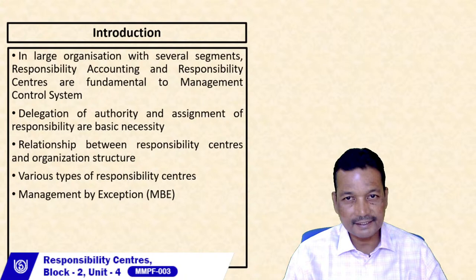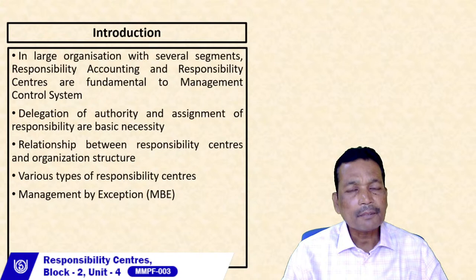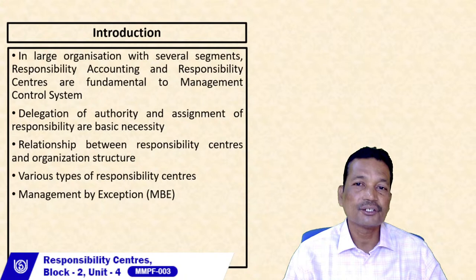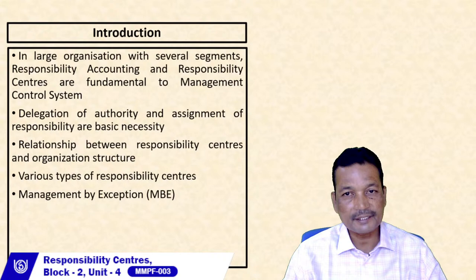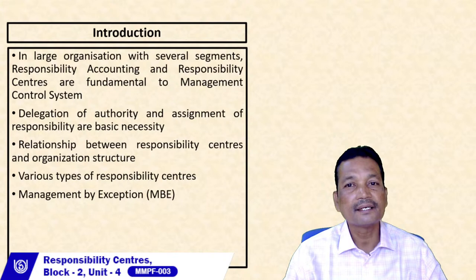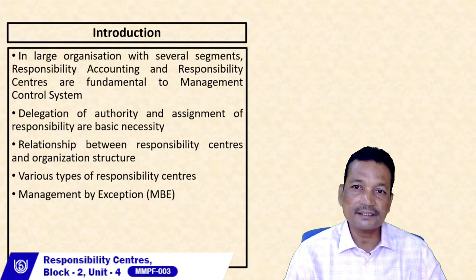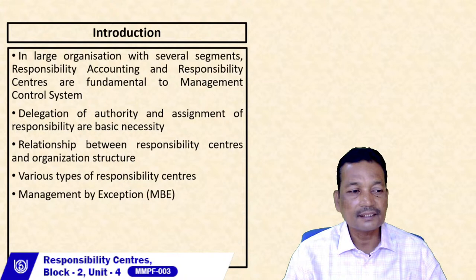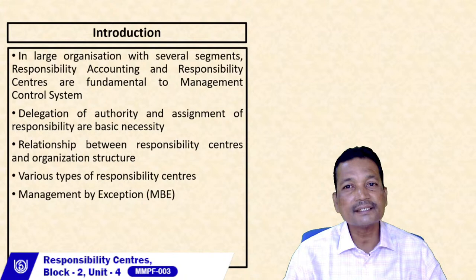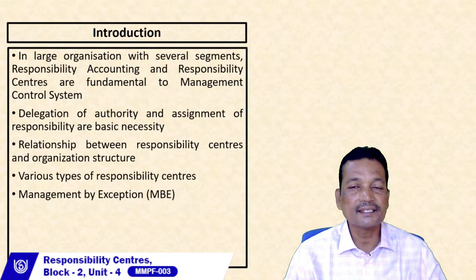When we have both cost and revenue at the same time, we can determine profits. If profit is negative, we call it losses. Apart from day-to-day operations, organizations also look for future expansion and modernization, which may maximize returns on the amount invested. We can call this investment. We will be looking at all these things in this block, starting with responsibility centers.